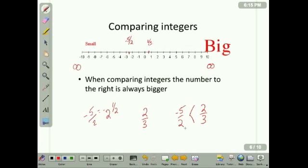We could also convert these to decimals. This would be negative 2.5, and this would be 0.66. Now, because it falls to the right, we say that 2/3 is larger than negative 2.5.